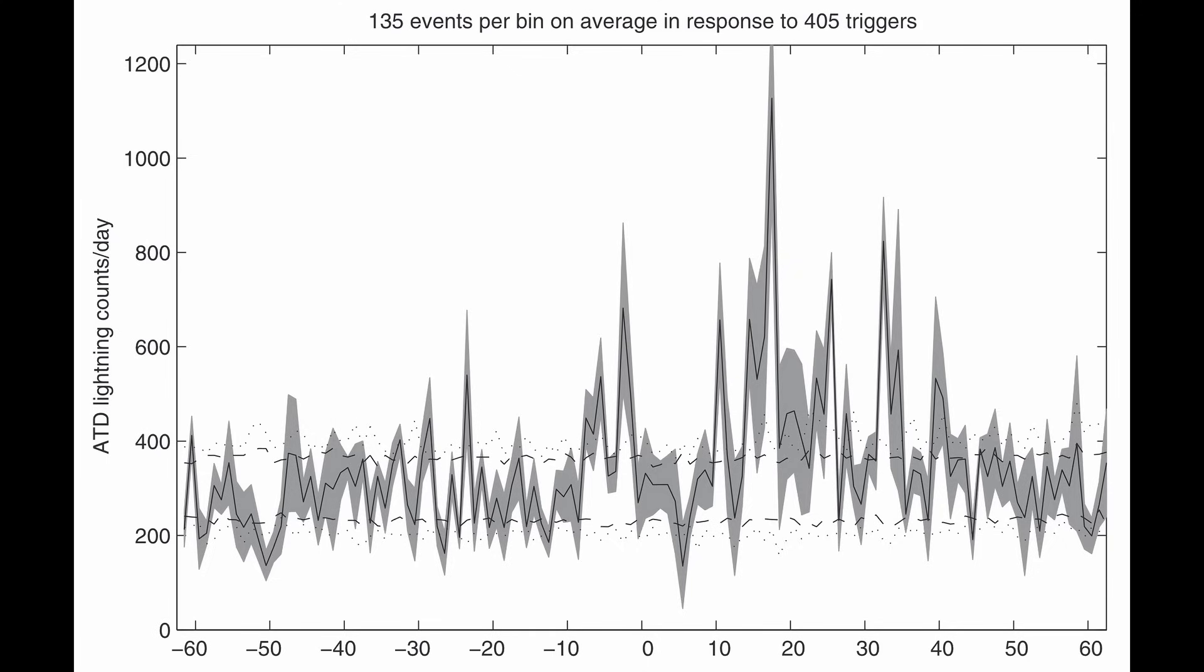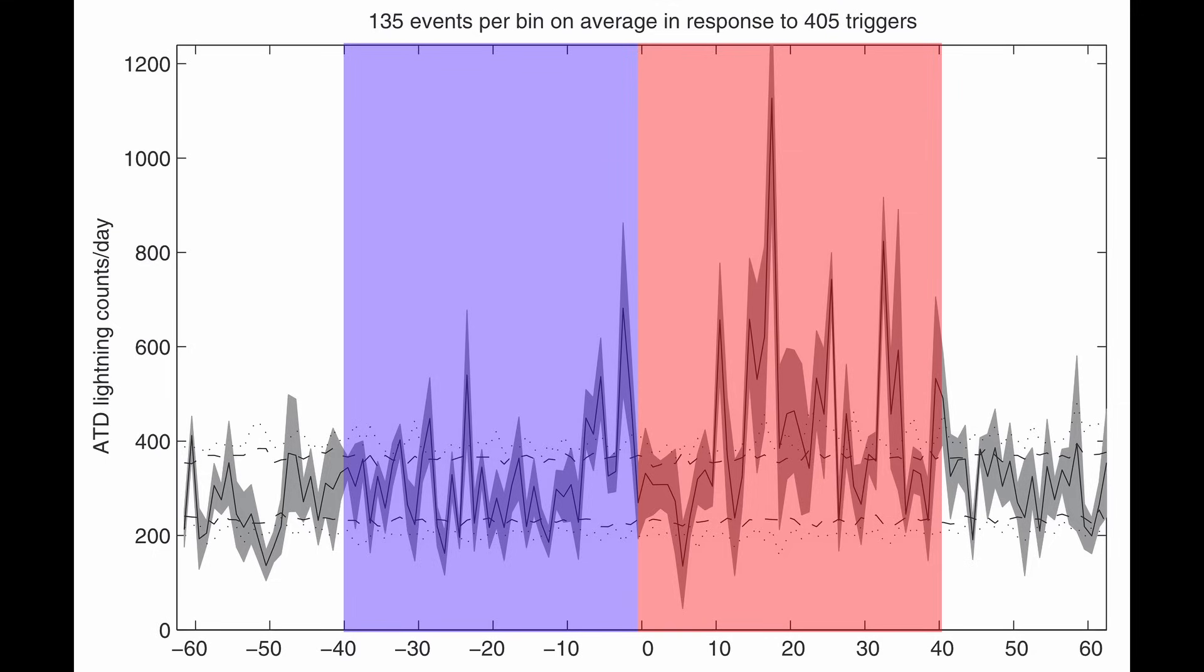An average of 422 lightning bolts per day manifested in the 40 days following the arrival of a high-speed solar wind stream at Earth, while during the preceding 40 days, there was an average of only 321 lightning strikes per day.